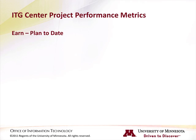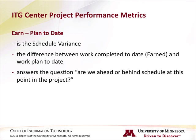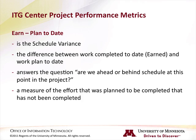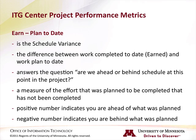Earn minus plan to date represents the schedule variance. It's the difference between work completed to date (earned) and work planned to date. It answers the question: are we ahead or behind schedule at this point in the project? It is a measure of the effort that was planned to be completed that has not been completed, and it quantifies the number of days the project is ahead or behind in work effort to complete its deliverables. A positive number indicates you are ahead of what was planned; a negative number indicates you are behind.